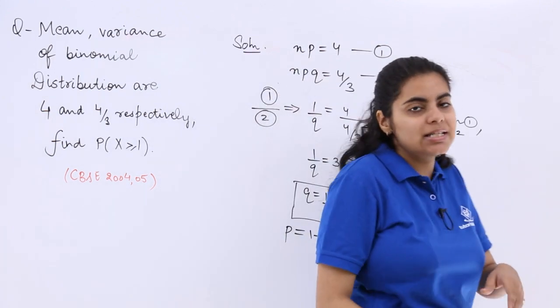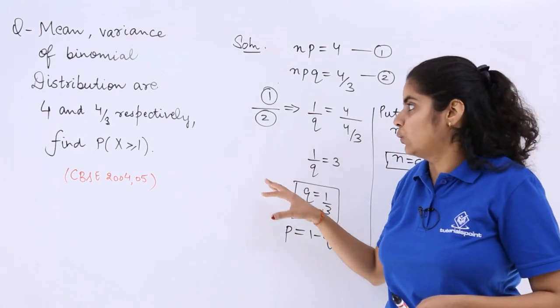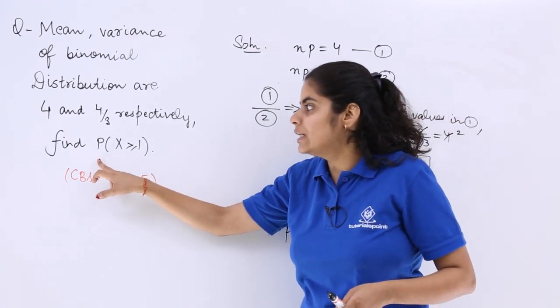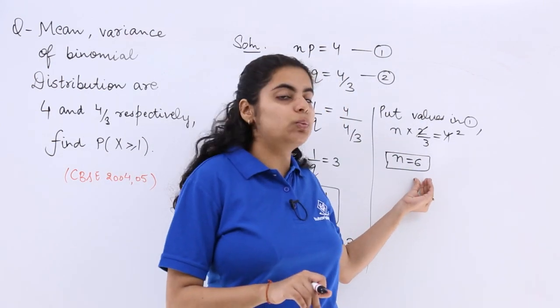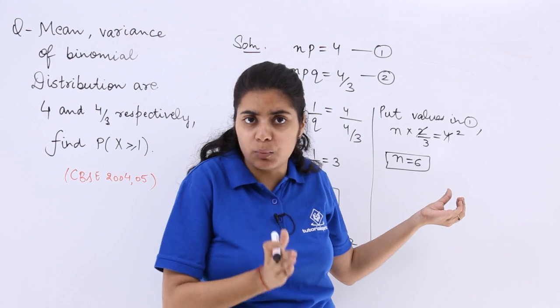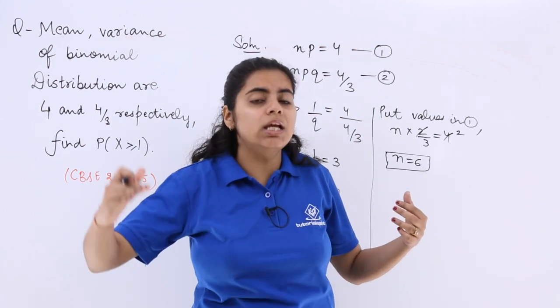So number of trials are known. Probability of success is known and failure is known. We have to find out probability when X is greater than equal to 1. Now for greater than equal to 1, we have to move from X equals 1, 2, 3, 4, 5 and 6 which is very lengthy.